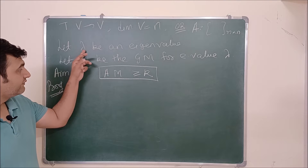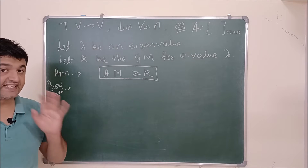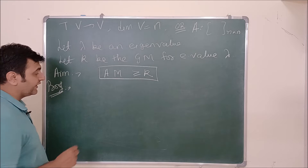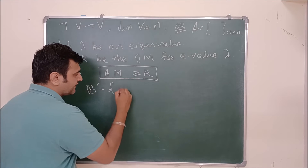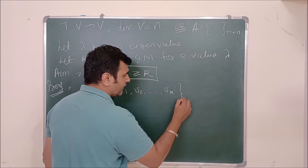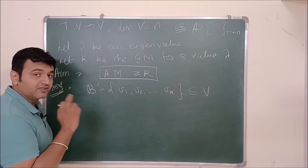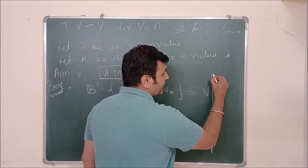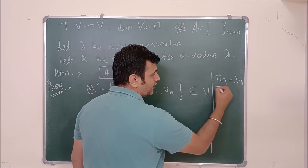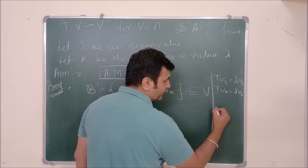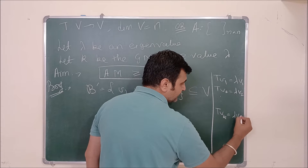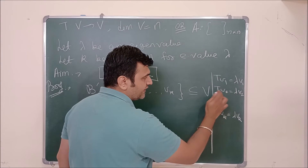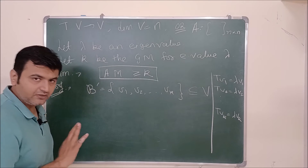What we want to prove is that the algebraic multiplicity for this eigenvalue λ is at least k, i.e., greater than or equal to k. We are given that k is the geometric multiplicity. Let B' = {v1, v2, ..., vk} — this is a linearly independent set of eigenvectors for eigenvalue λ. That means T(v1) = λv1, T(v2) = λv2, ..., T(vk) = λvk. Equivalently, Av1 = λv1, Av2 = λv2, and so on.